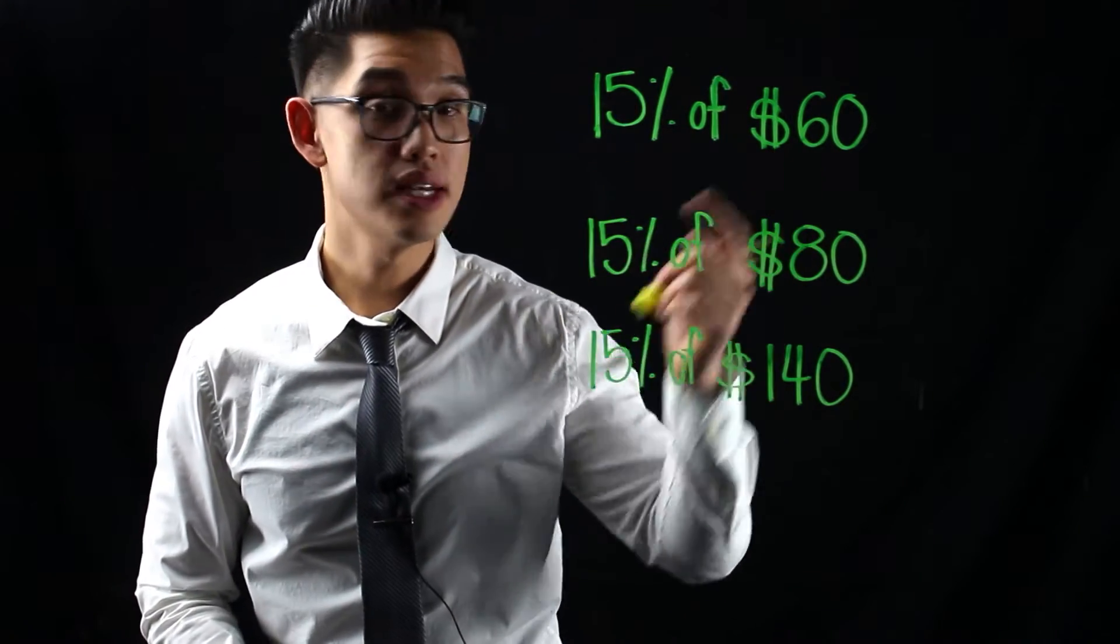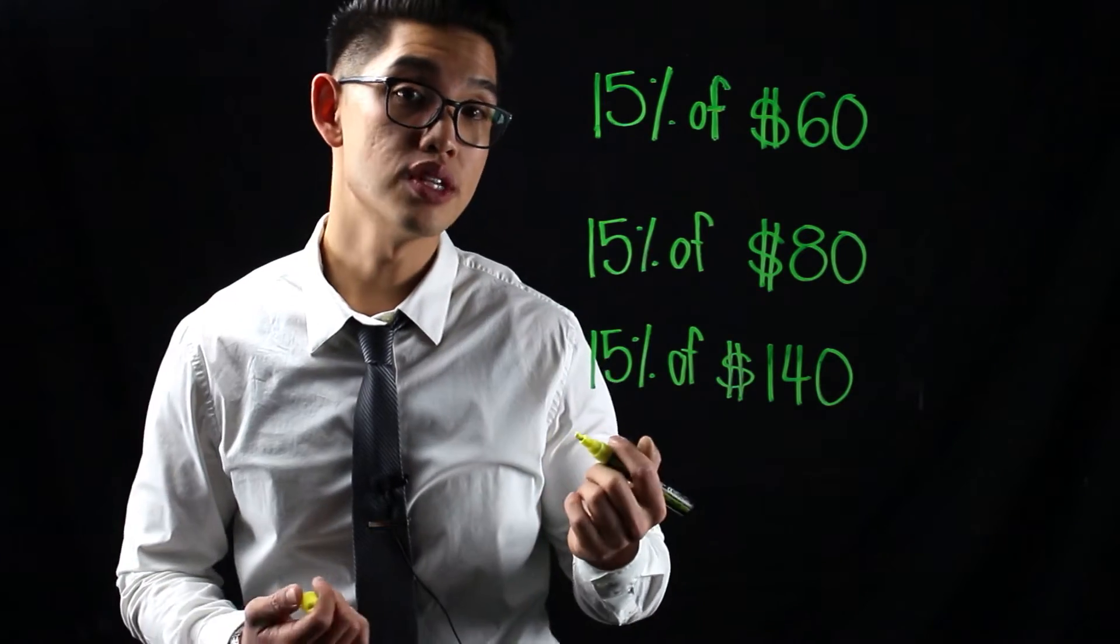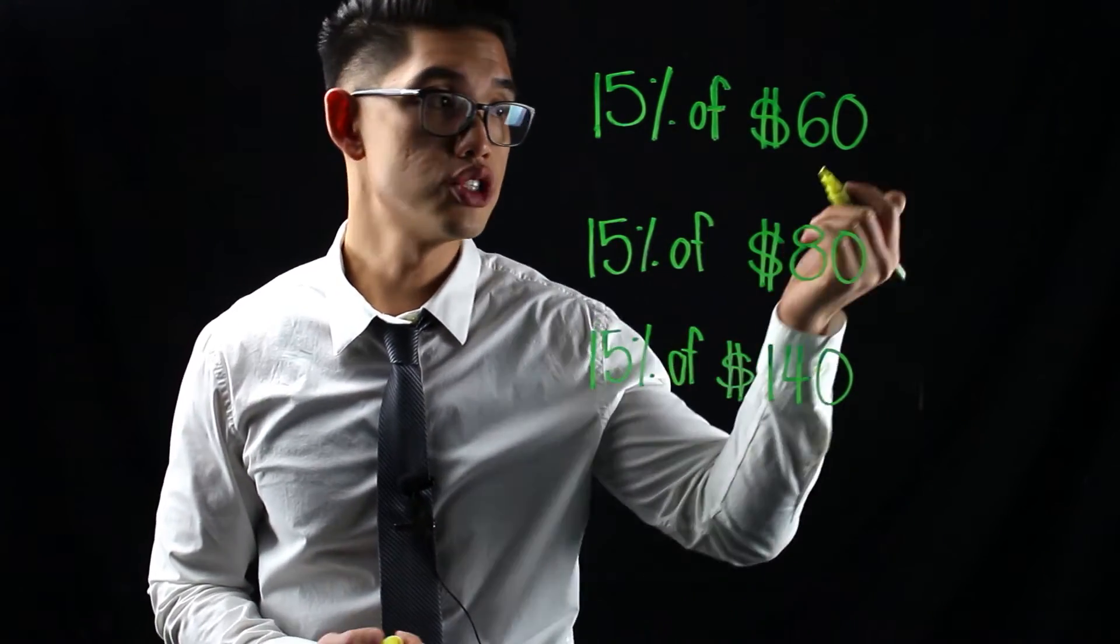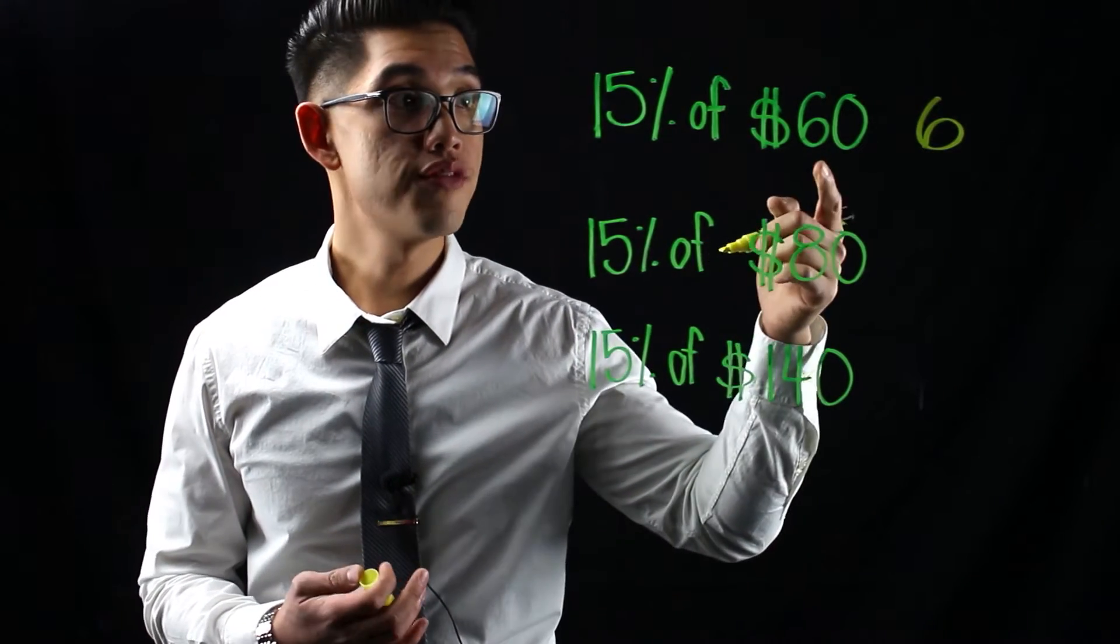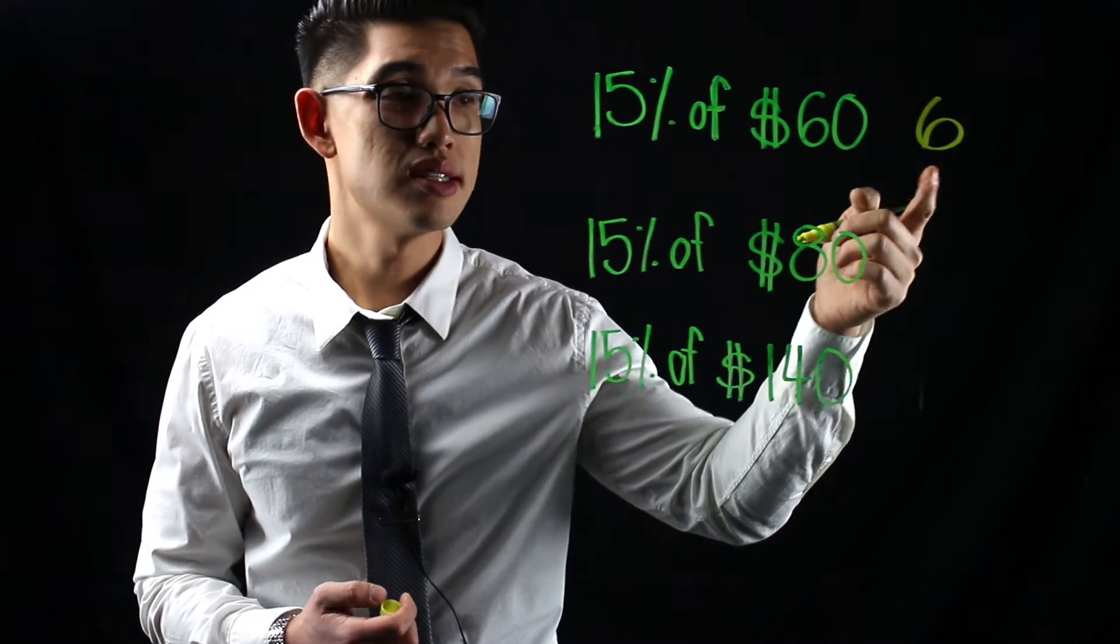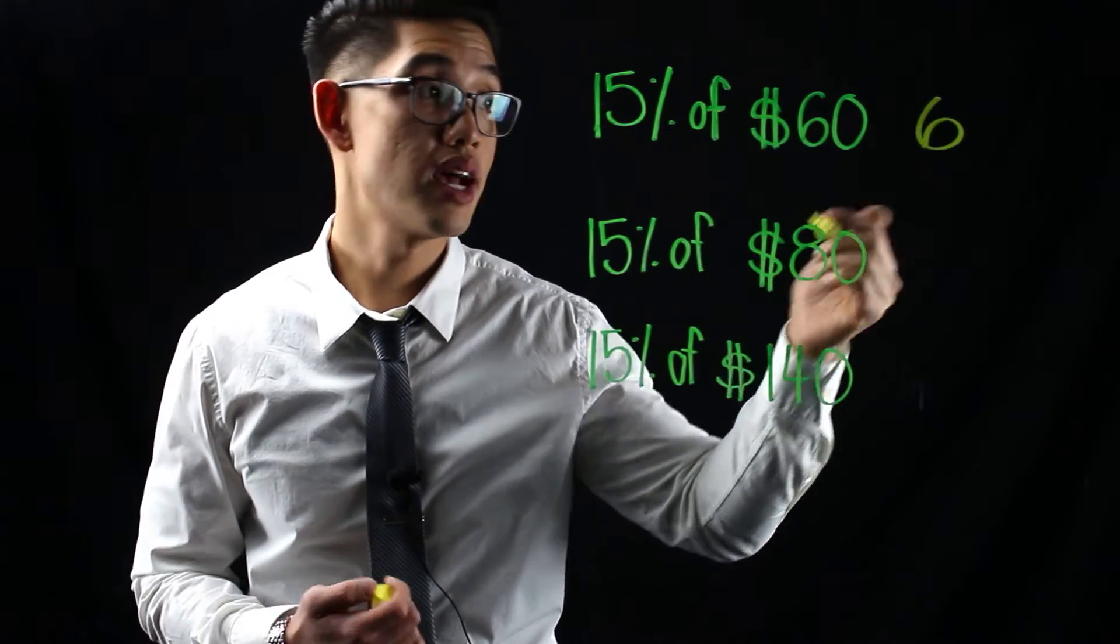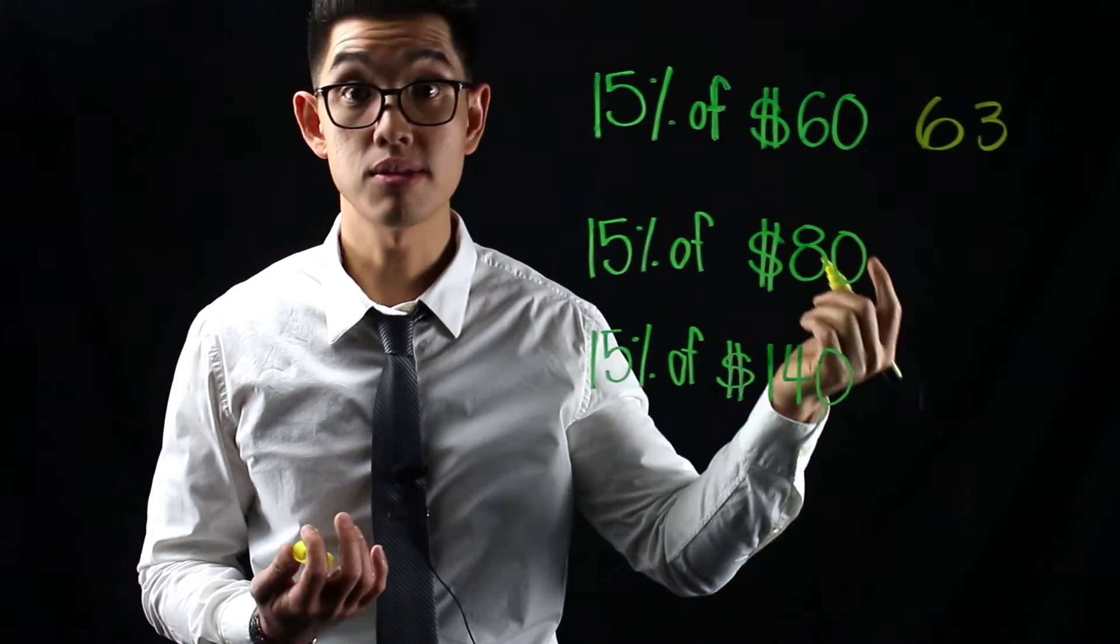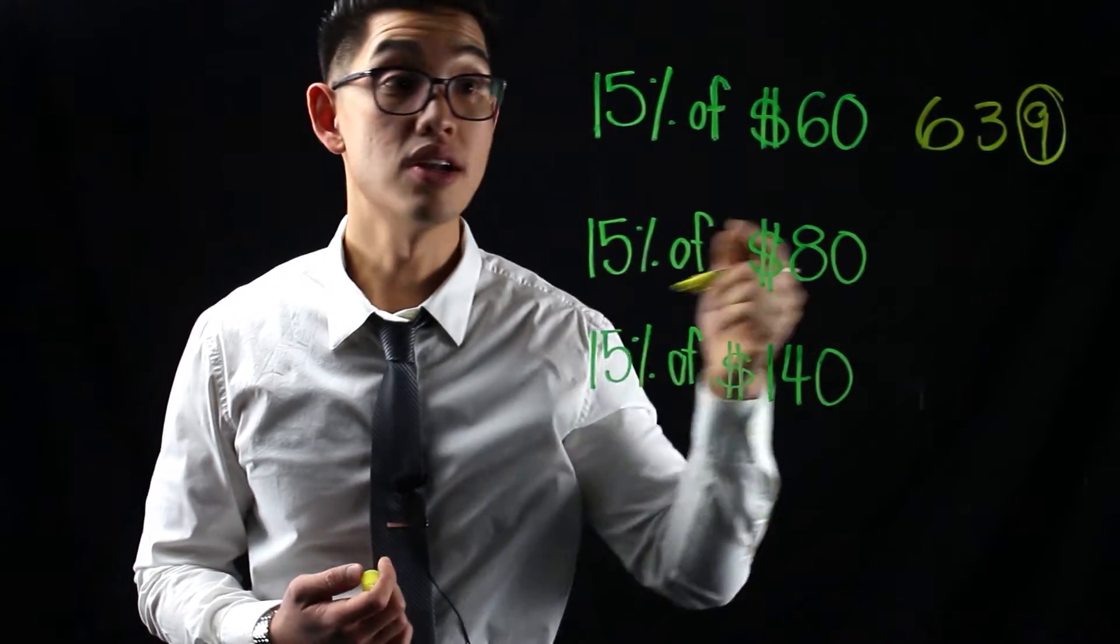Now if I want to find 15% of $60, the first thing you want to do is find 10% of 60. 10% of 60 is just 6. And then you want to find 5% of 60. Well, since you already know that 10% is 6, 5% has to be half of that, which is 3. Then you just add up these two numbers. 6 plus 3, that gives you 9. So it's going to be $9.